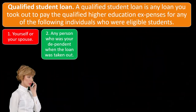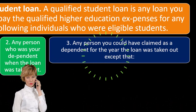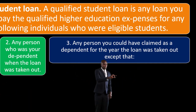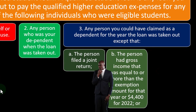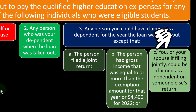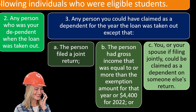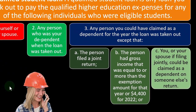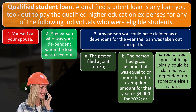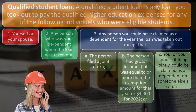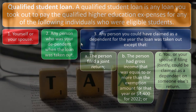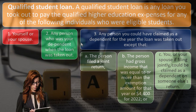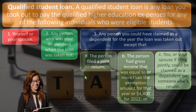Other eligible individuals include: two, any person who was your dependent when the loan was taken out; and three, any person you could have claimed as a dependent for the year the loan was taken out, except where: (a) the person filed a joint return, (b) the person had gross income equal to or more than the exemption amount for that year — $4,400 for 2022 — or (c) you or your spouse filing jointly could be claimed as a dependent on someone else's return.